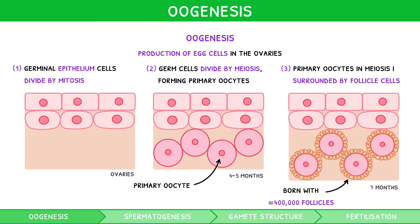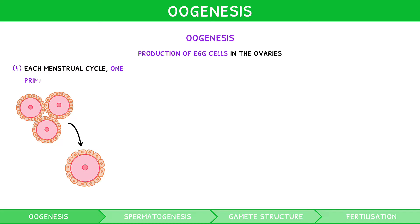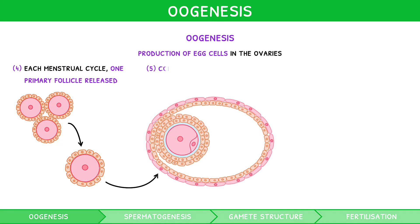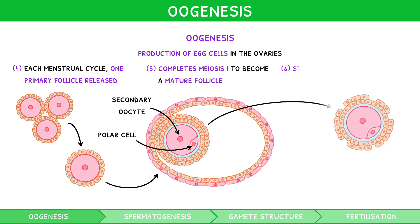Once the fetus is born and the child undergoes puberty, during each menstrual cycle, one primary follicle completes the first division of meiosis to become a mature follicle, containing a secondary oocyte and a small haploid polar cell. When stimulated by HCG, the secondary oocyte begins the second division of meiosis but stops at prophase II, before it is released during ovulation.